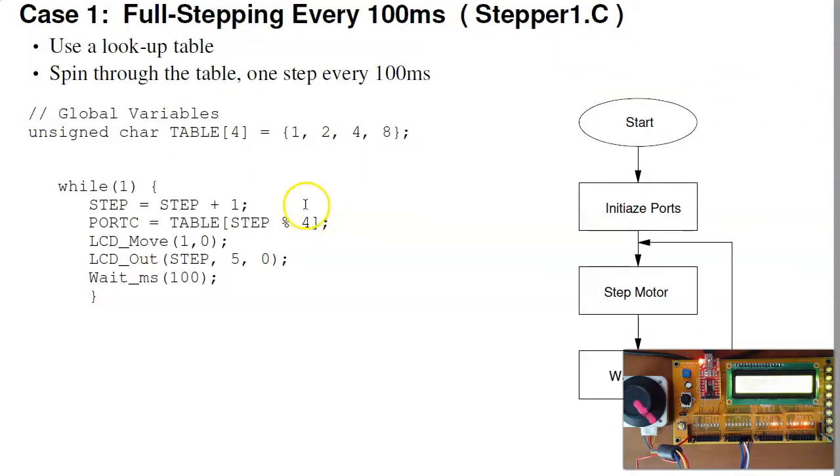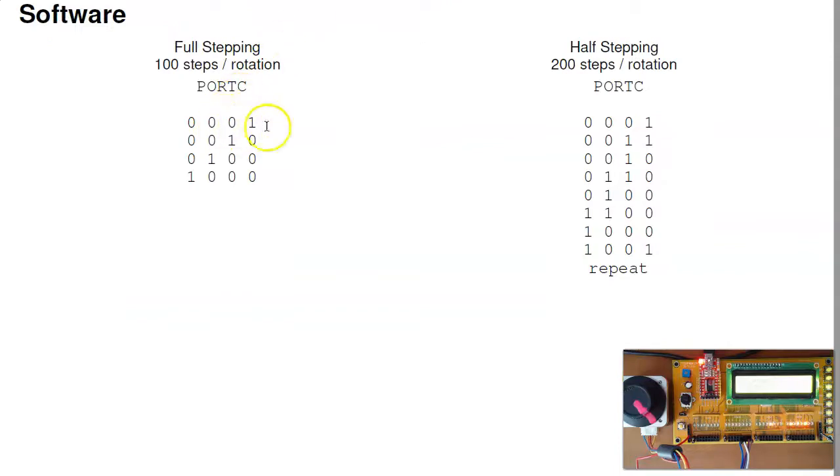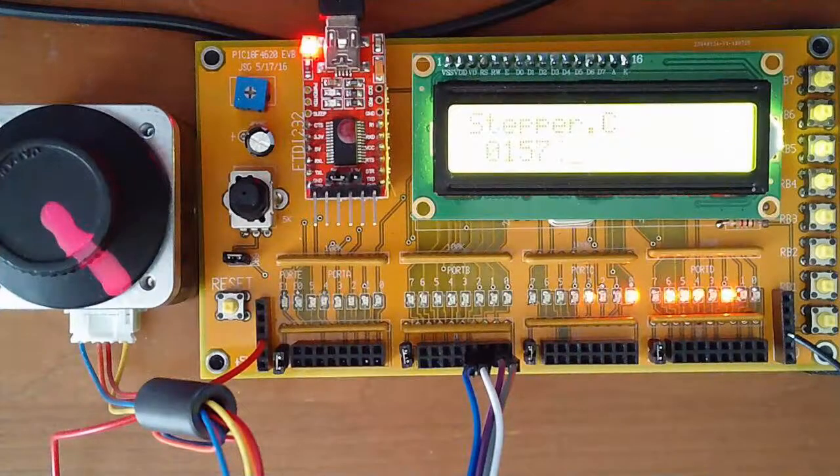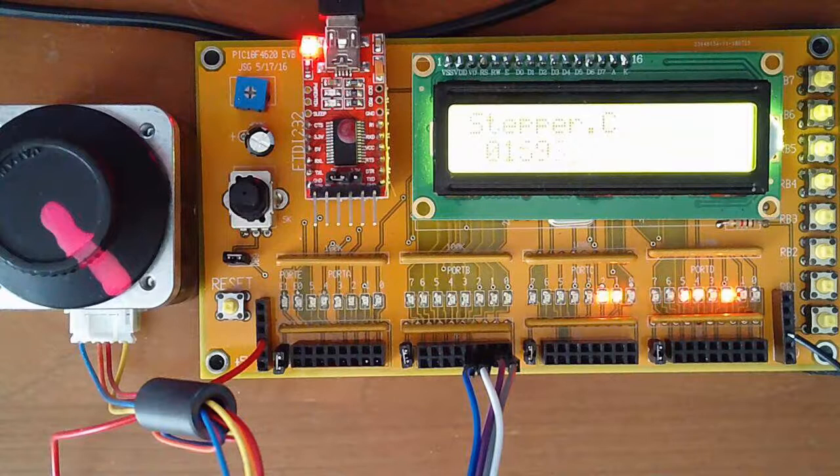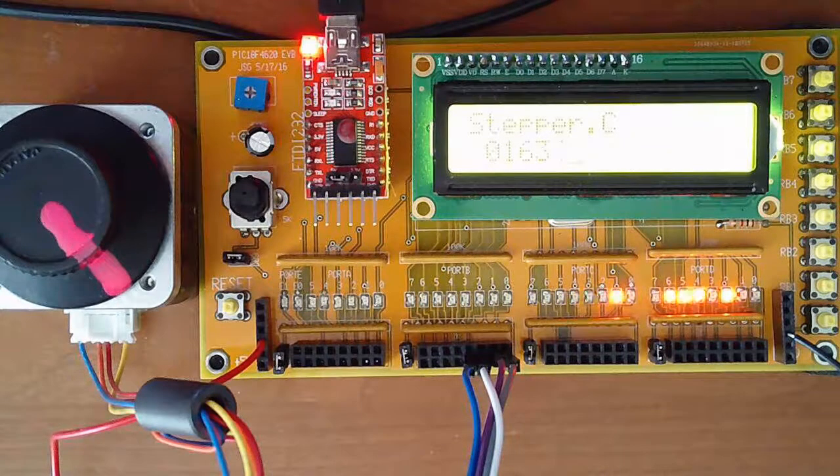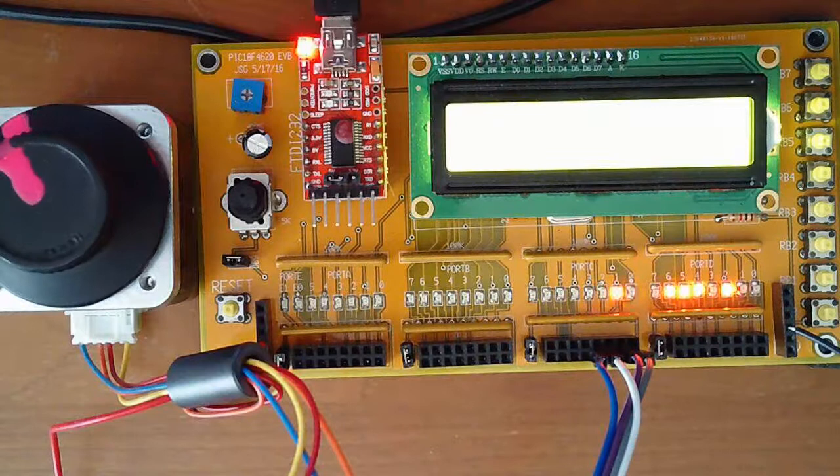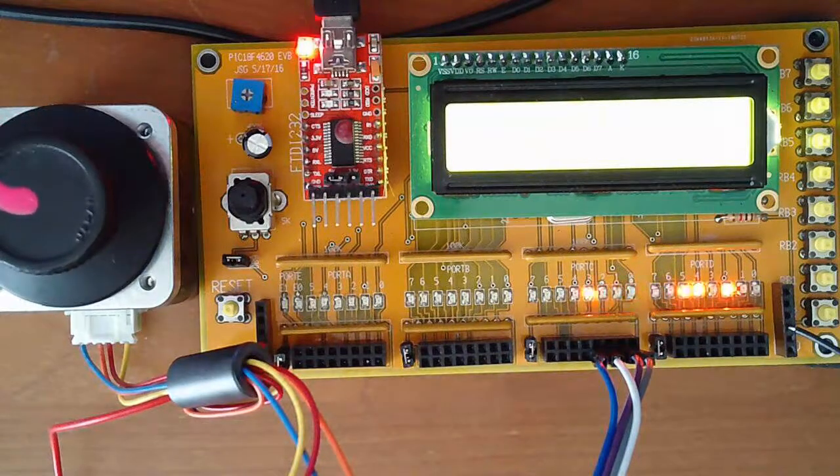In terms of software, this would be the first program. To get it to rotate, I'm using a lookup table. This is a global variable. If I say table of 0, I get 1. Table of 1, I get 2. These numbers are the bit pattern: binary 1, 2, 4, 8. Make that my lookup table, and I can just rotate through it. This is counting mod 4. So as I count mod 4, I just spin through the table. I'm just going through the table, outputting 1, 2, 4, 8, 1, 2, 4, 8, stepping every 100 milliseconds. I get a stepper motor that's rotating, 1 step every 100 milliseconds.